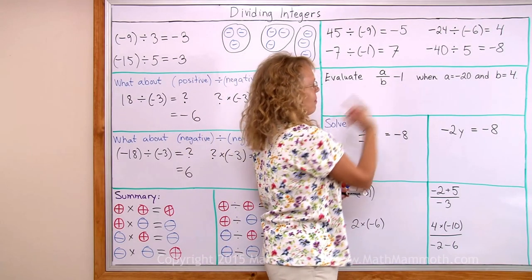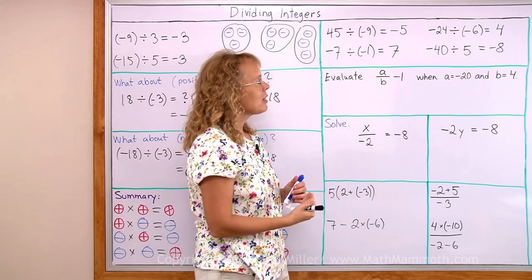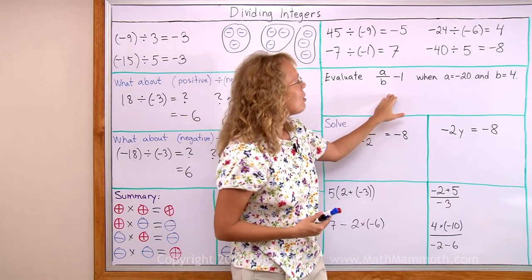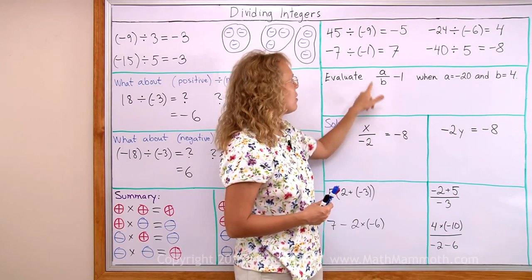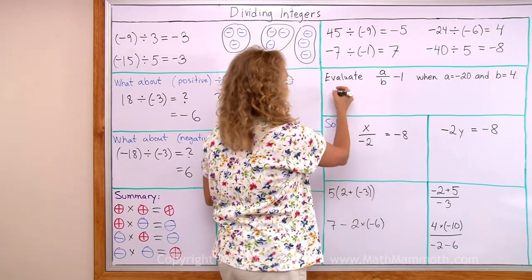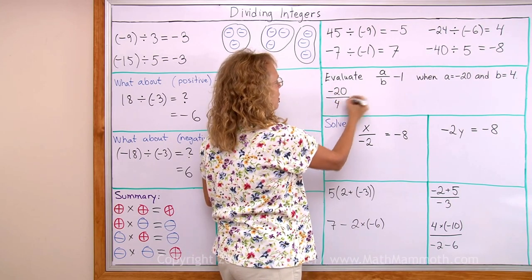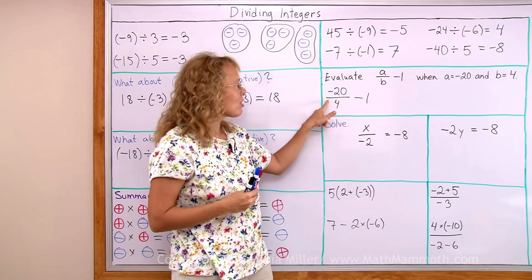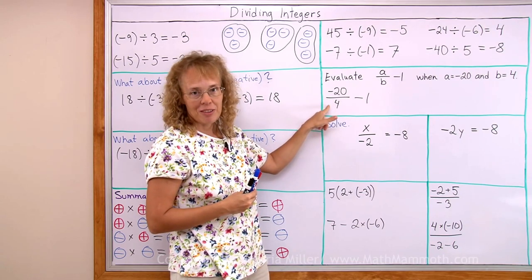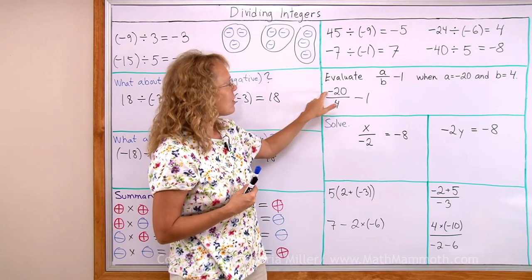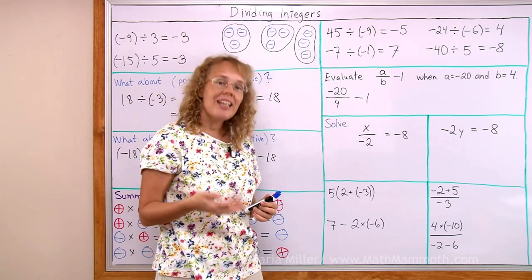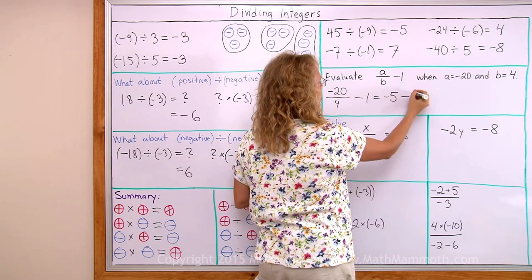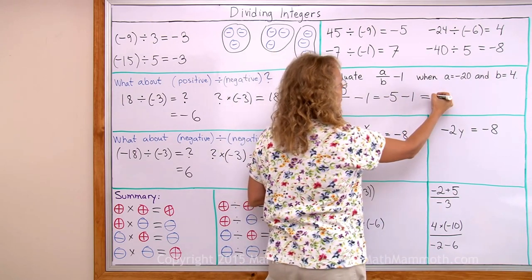Evaluate a over b minus 1, when a equals negative 20 and b equals 4. This is an expression; we need to find its value when we know the values of a and b. Simply write the values into the expression: negative 20 divided by 4, minus 1. Notice the division is written with a fraction line. Negative divided by positive, so the answer will be negative — and 20 divided by 4 is 5, so we get negative 5. Then we subtract 1 more, giving negative 6.